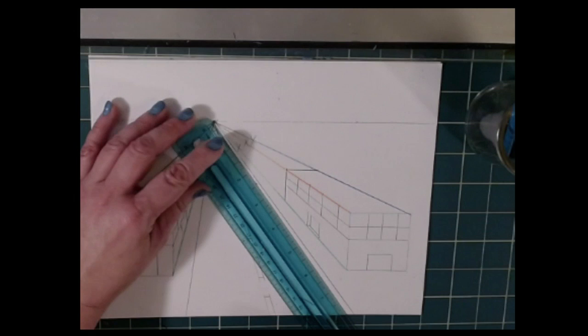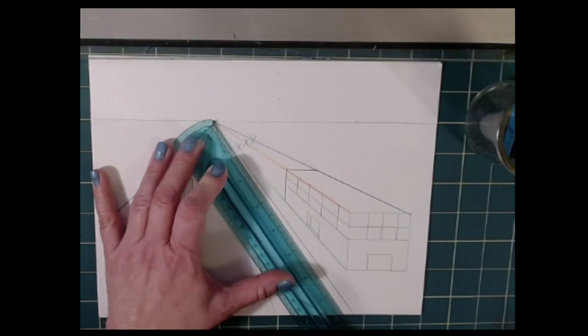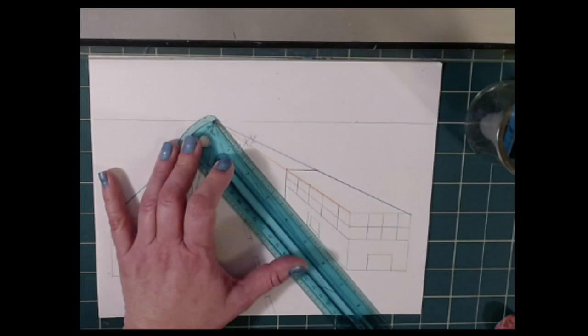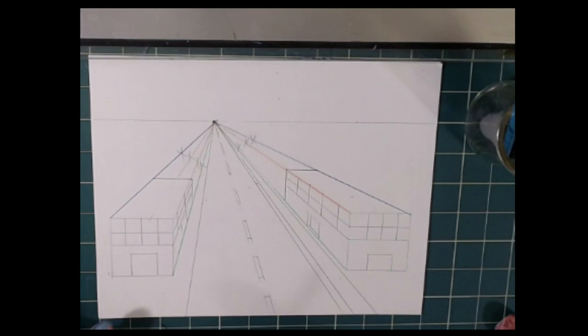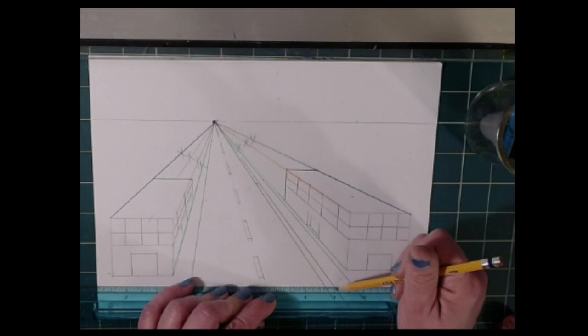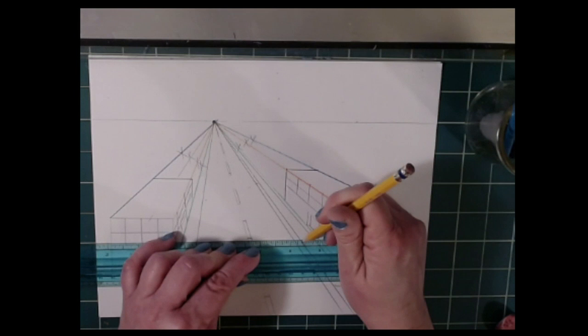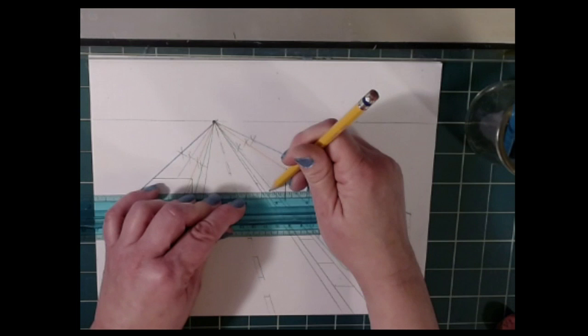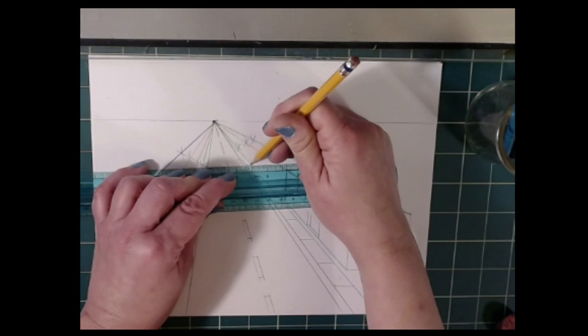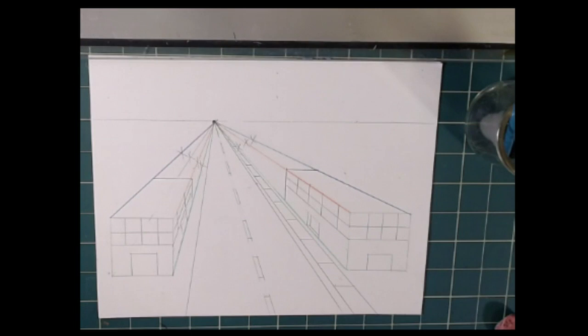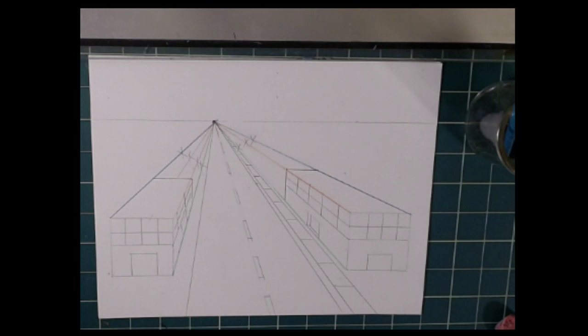To make a curb and a sidewalk I'm going to go near this line and bring it back to the vanishing point. And I'm going to make another line on the other side near but not touching my green line. To make it look like the sidewalk has been paved and divided I'm just going to add some horizontal lines. And now I've got something of a curb and a sidewalk.